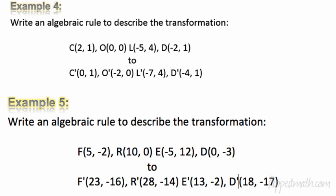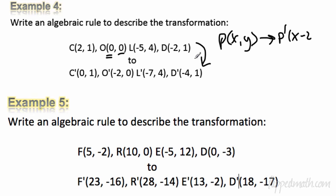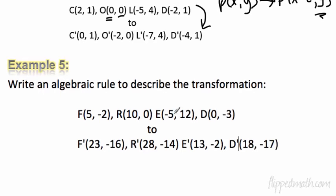Example 4: writing an algebraic rule from coordinate tables. A useful trick: look at a point with a zero coordinate to easily spot the change. Starting at (0, y) and moving to (−2, y) means the x decreased by 2 — so subtract 2 from x. Check: subtract 2 from all x-values — it works. The y-values stay the same, so just leave the y as is. The rule is: (x, y) → (x − 2, y).